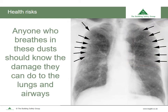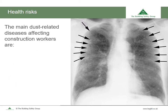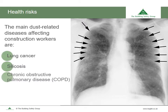Anyone who breathes these dusts should know about the damage they can do to the lungs and airways. You may need to put a health surveillance programme in place and may need advice from an occupational health professional. The main dust-related diseases affecting construction workers are lung cancer, silicosis, chronic obstructive pulmonary disease (COPD), and asthma. Some lung diseases like advanced silicosis or asthma can come on quite quickly.